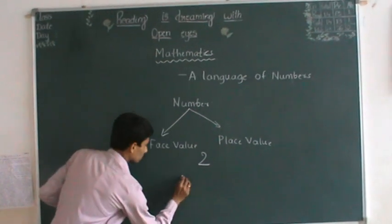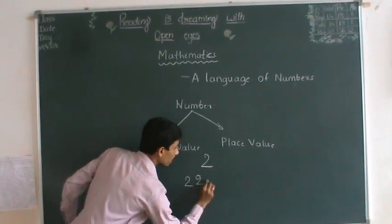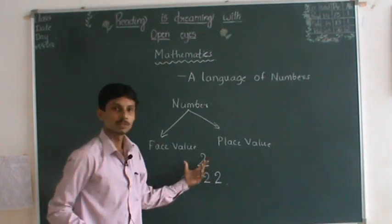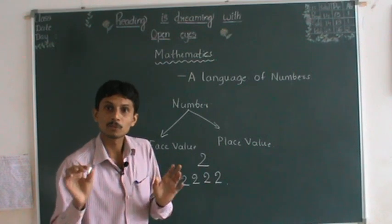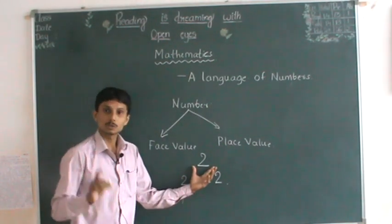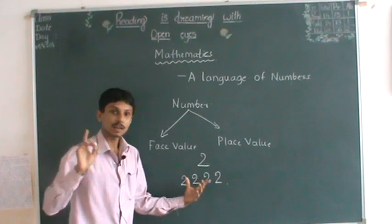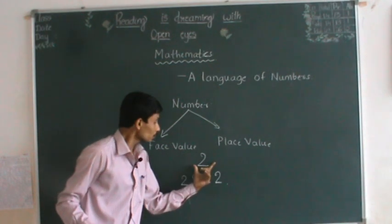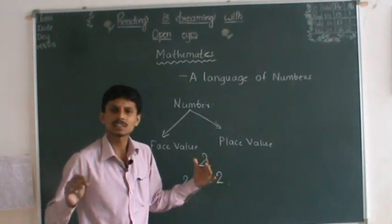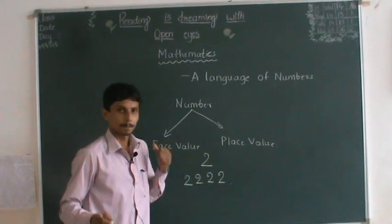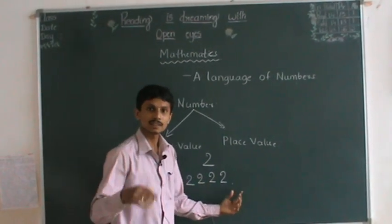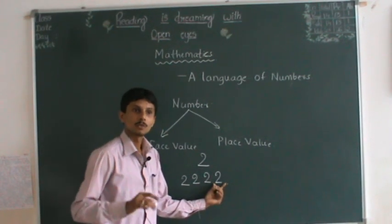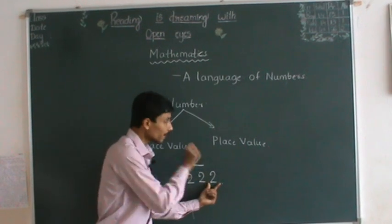Now let us consider a bigger number: 2222. This is a much bigger number than 2. How can I identify it? From the face value — because there are four 2s here. From the face value, I identified 2. In 2222, there are four 2s. What is the face value of each digit? It is 2. Again 2, again 2, again 2 — each digit's face value is 2.